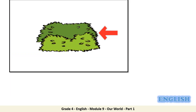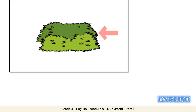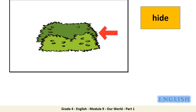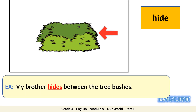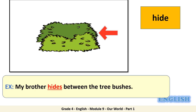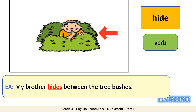Let's have a look at this picture. What's going on over there? What is he doing? Hide. My brother hides between the tree bushes. Can you tell us which part of speech it is? It's a verb.